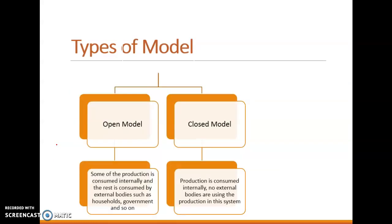There are two types of models under the Leontief model: the open model and the closed model. The closed model says that all production of industries is consumed by the other industries and there are no external bodies — no government and no consumers — so industries only produce what is sufficient for other industries. In the open model, some production is consumed internally by other industries and the rest is consumed by external bodies such as households and government. This open model is in the syllabus, so we will be understanding its operations only.